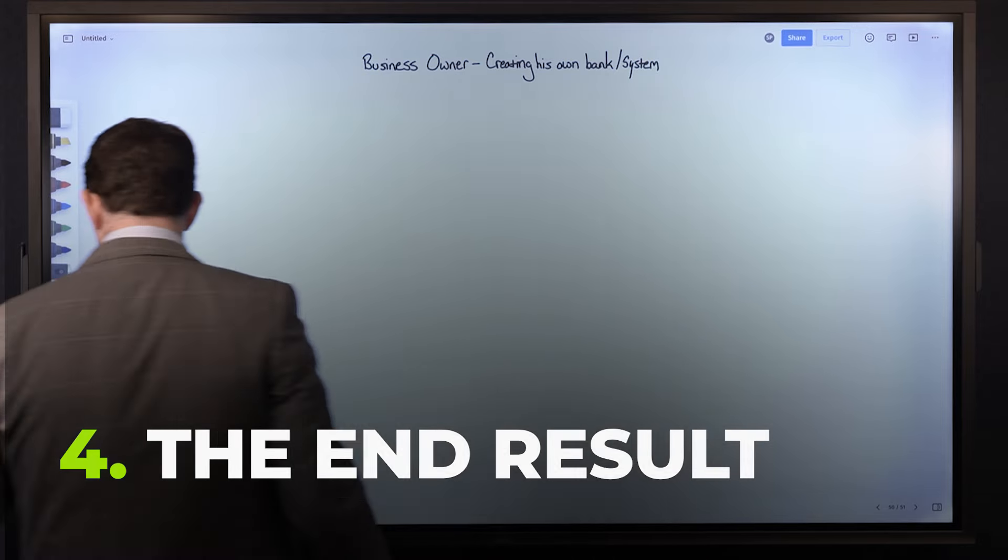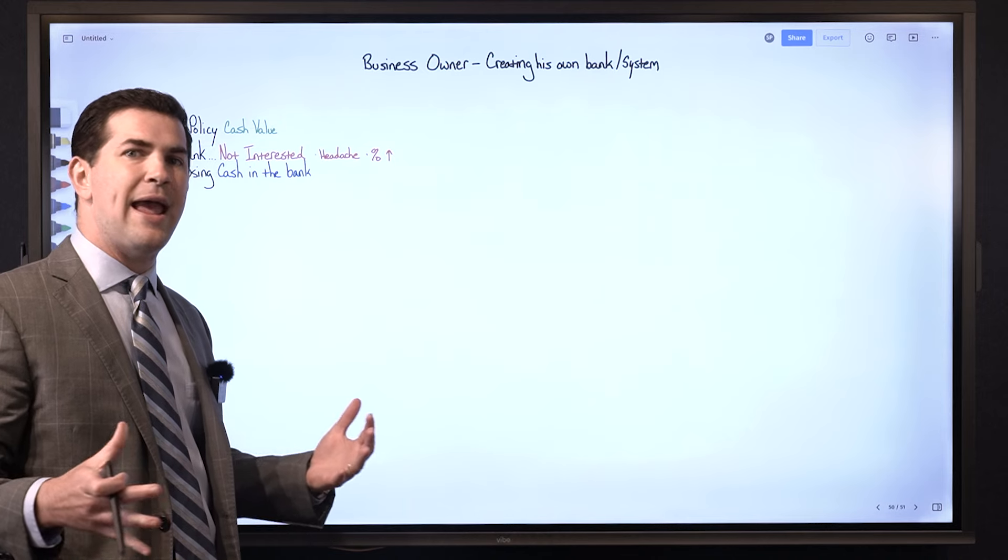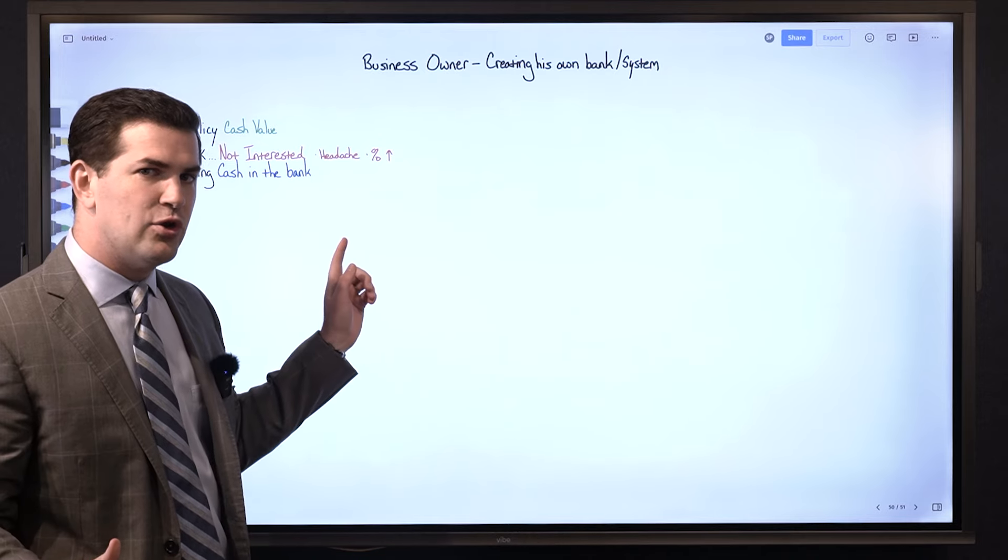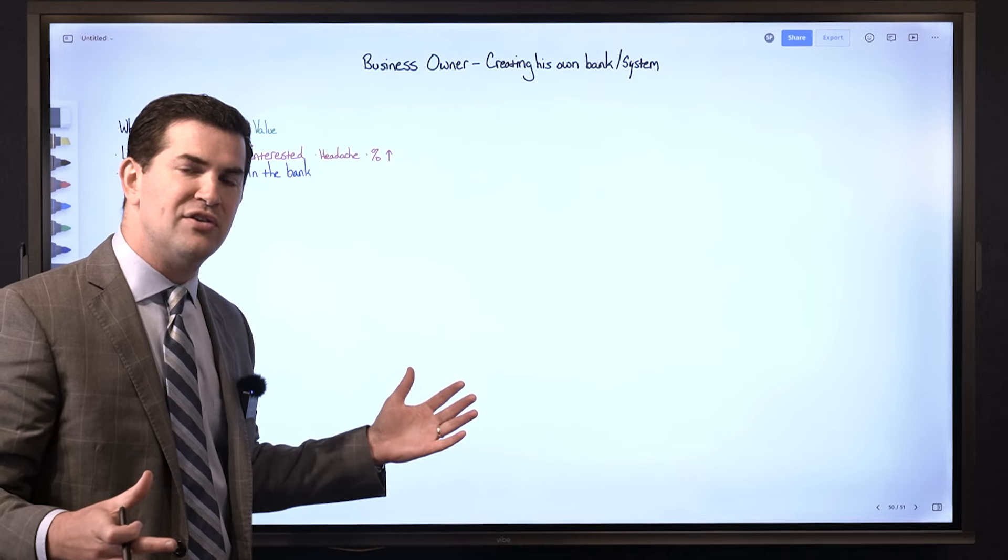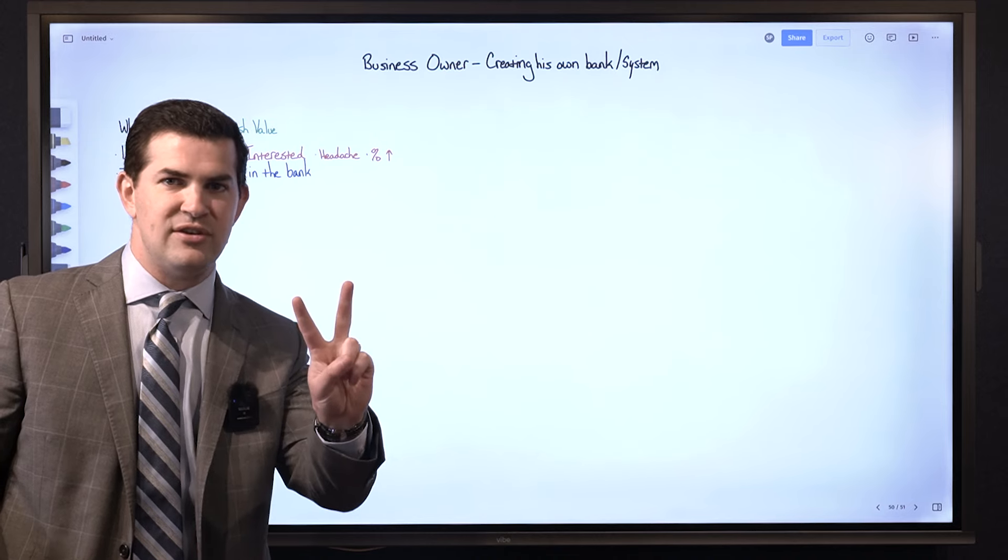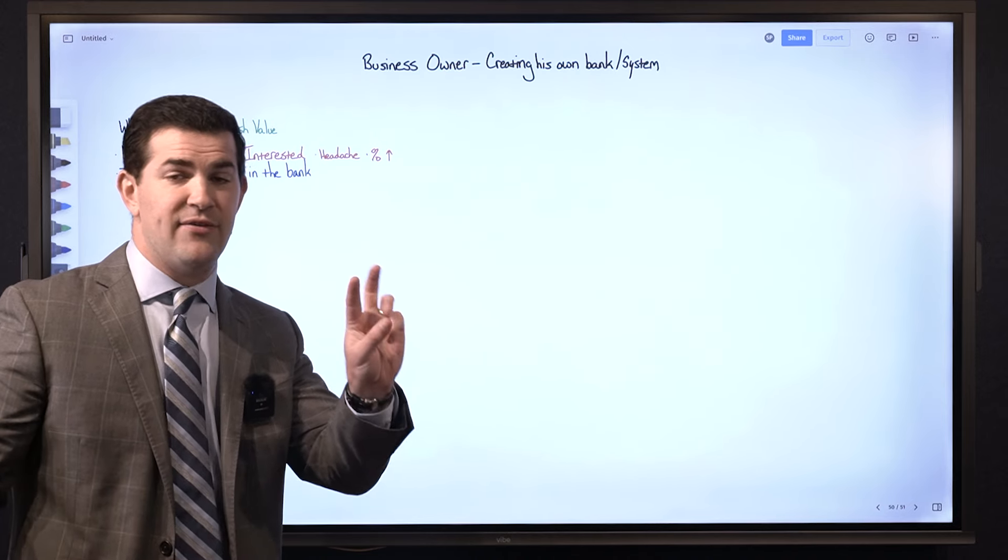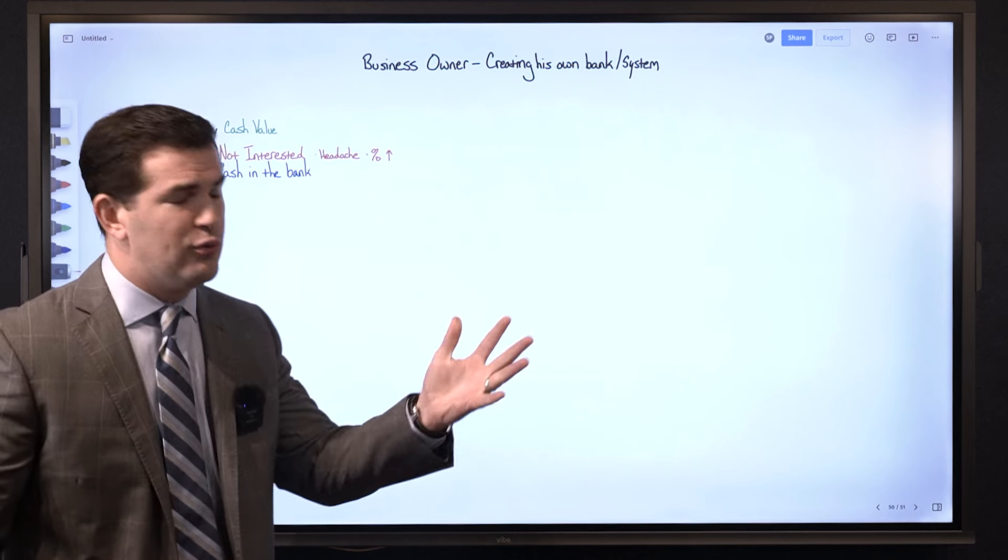So to begin, he's interested in a whole life insurance policy primarily for the cash value. He's expressed I don't really care about the death benefit, I'm interested in the cash value because I've learned that it's a safe place to put money, I can access it very easily, and my money keeps on compounding when I access it and if I do it all right it's tax-free.